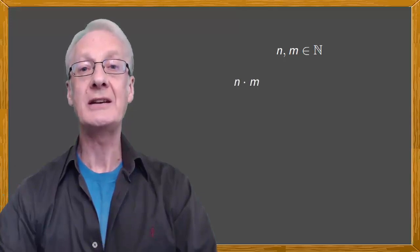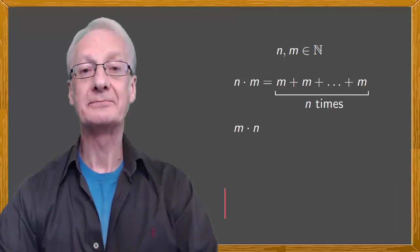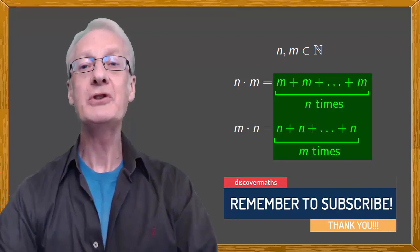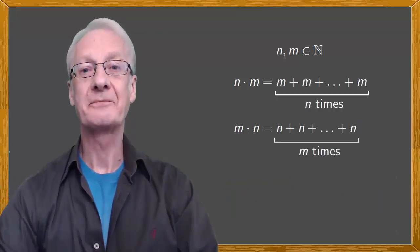The commutative property says that if n and m are natural numbers, then it's true that n times m is equal to m times n. We normally just assume this, but would you know how to get from here to here? Let's see how we can do it.